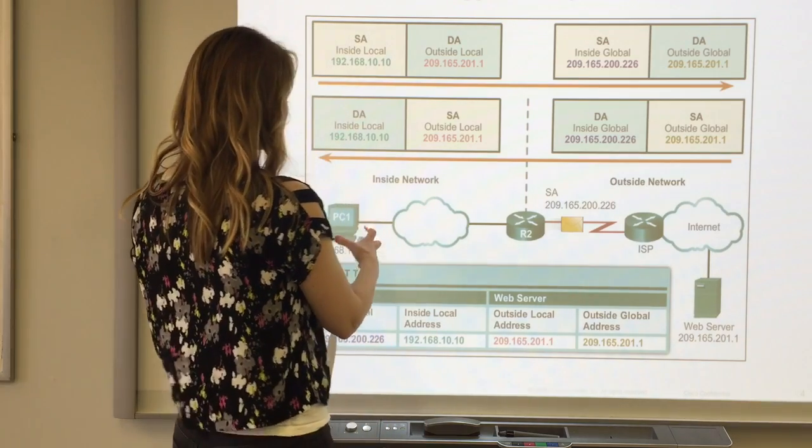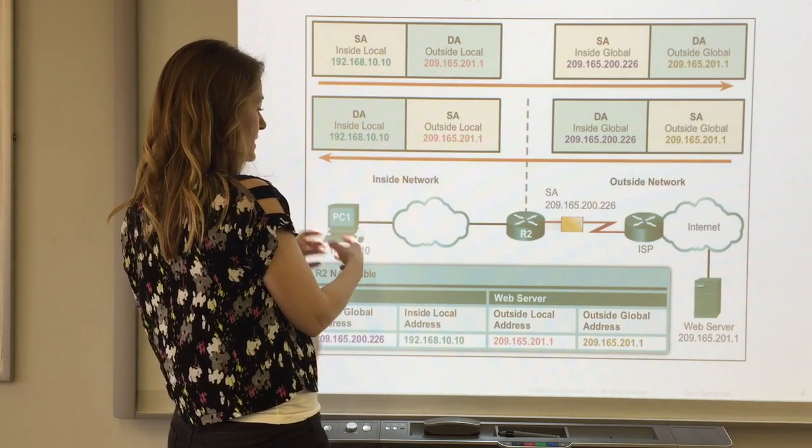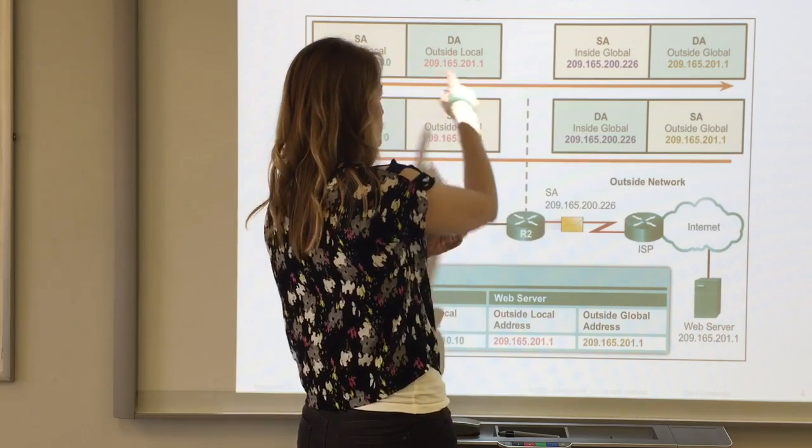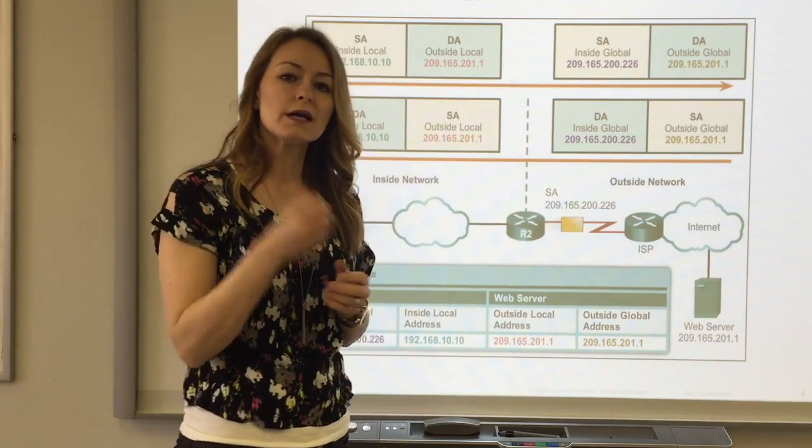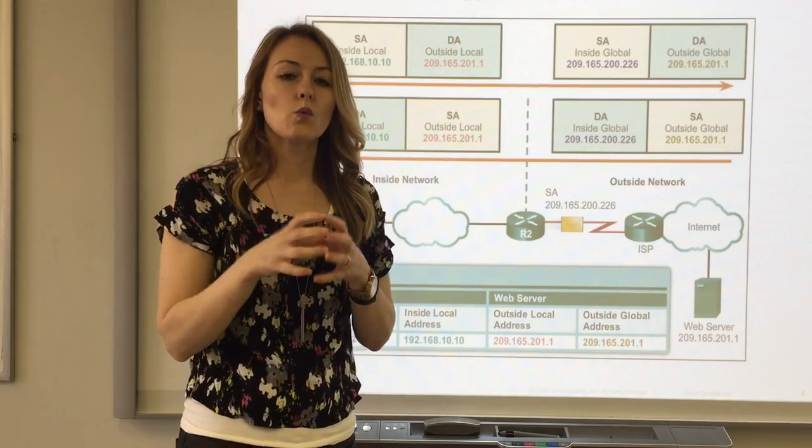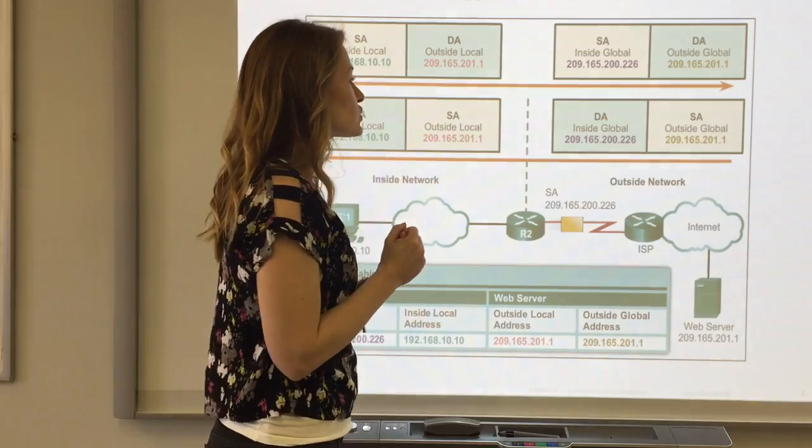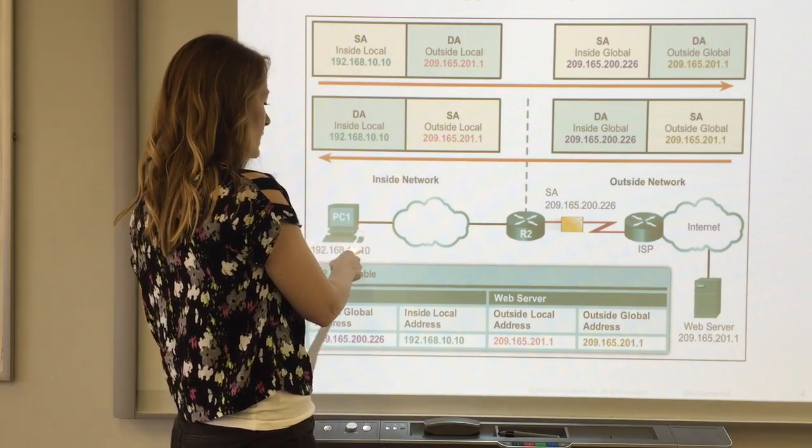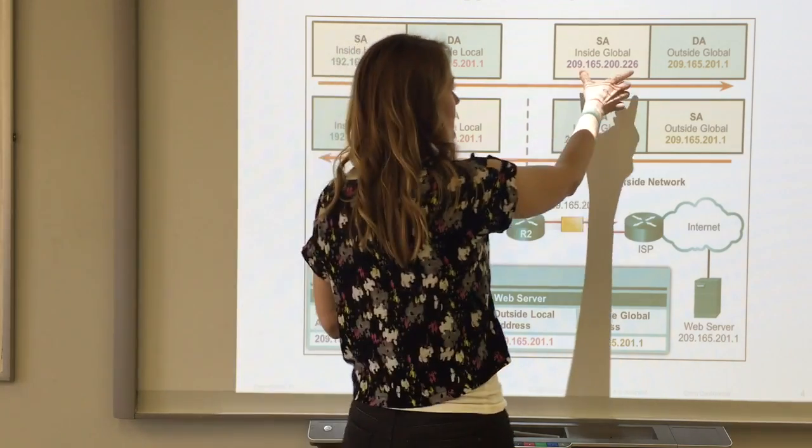The packet originates with this IP address and gets sent. As it's traversing to the destination address, it gets stopped at the border router. The border router is where the translation occurs. It's going to translate the inside local address to an inside global address.